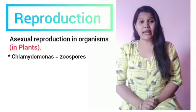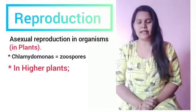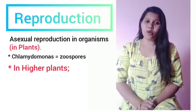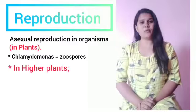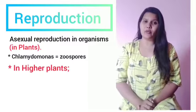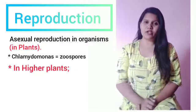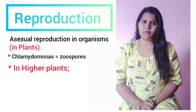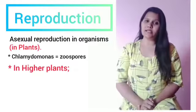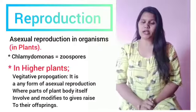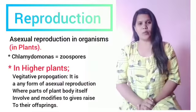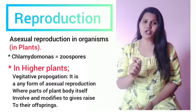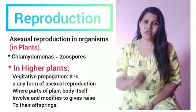Now let's move on to how asexual reproduction takes place in higher plants. In higher plants, asexual reproduction is also known as vegetative propagation. In this process, a specialized part or structure of the plant itself is involved in giving rise to new offspring.